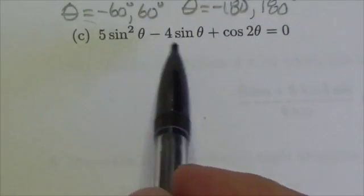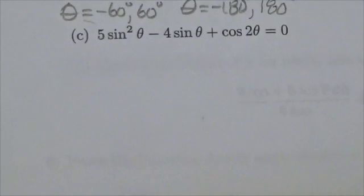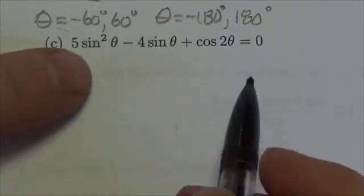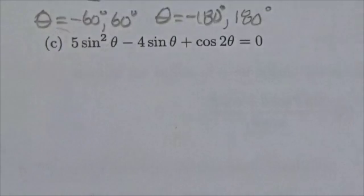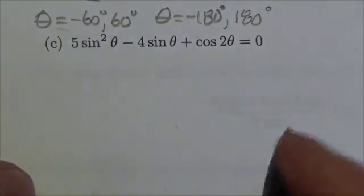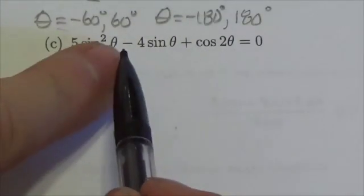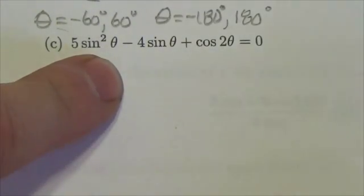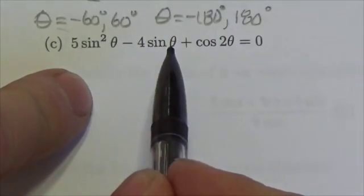5 sine squared of theta minus 4 sine theta plus the cosine of 2 theta. This equation has two very big problems with it. The first one is that we've got two different trig functions. Unless I can factor those apart, I can't solve this. But an even bigger problem is that the arguments are different for the trig functions. I need these all to be theta.